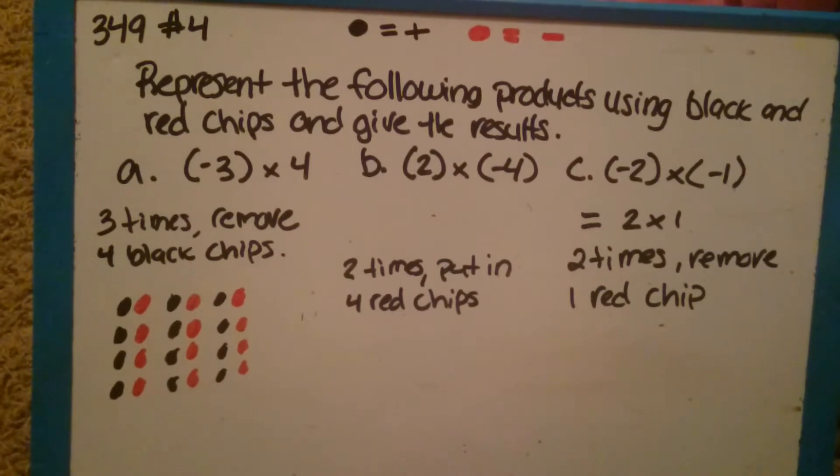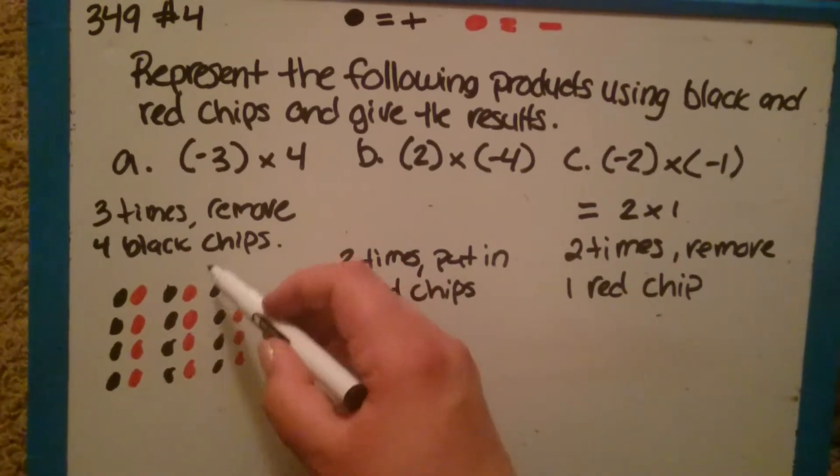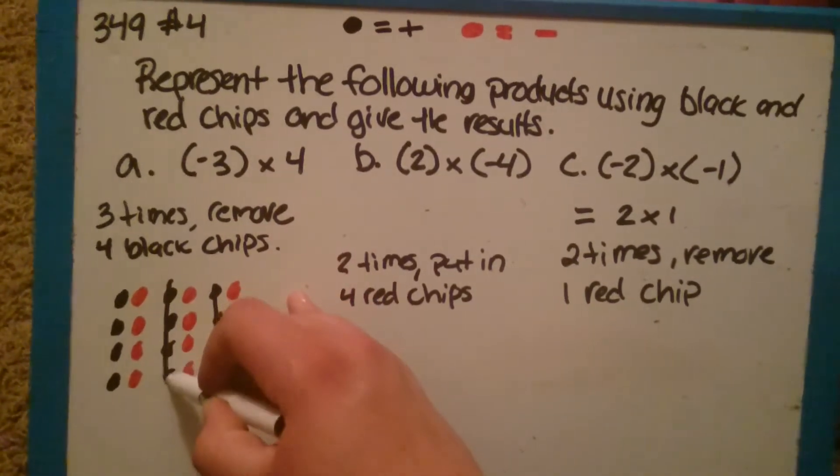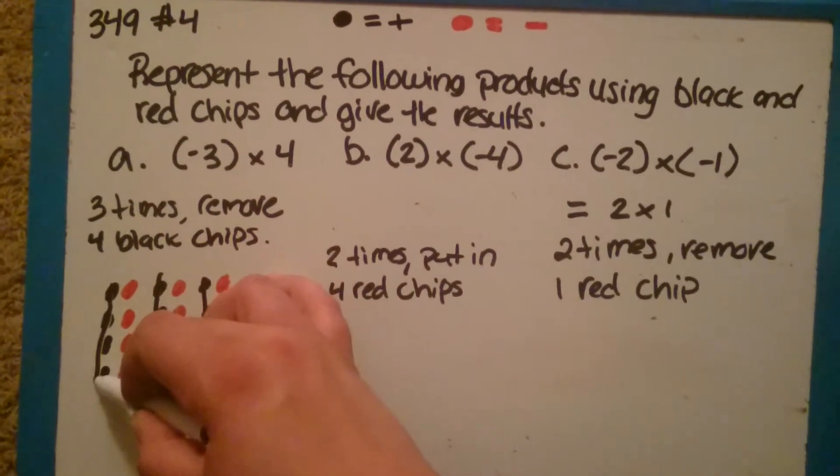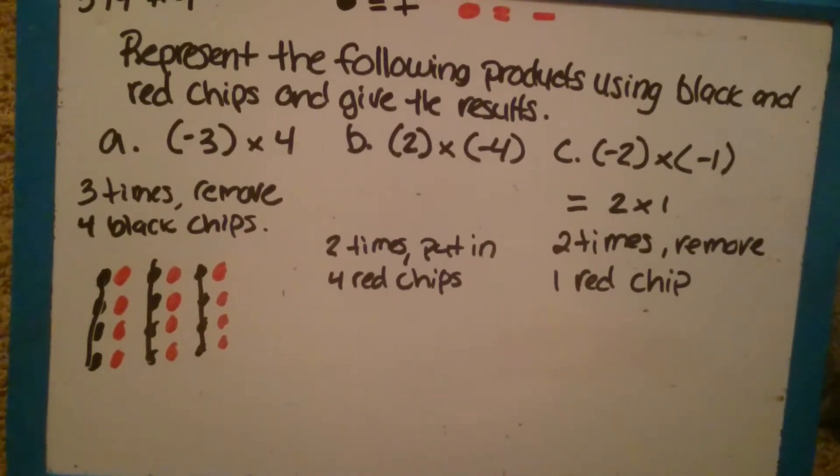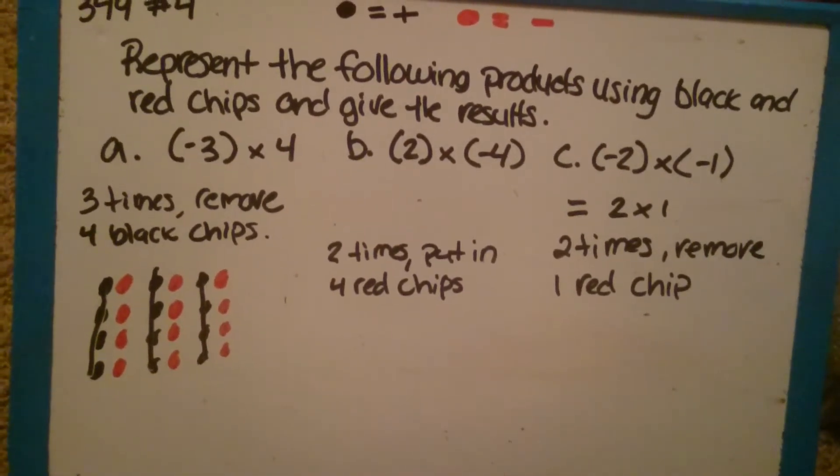And since it's saying to remove 4 black chips 3 times, we can take away 4 black chips 3 different times. So let's say there's 4, there's 4 twice, and there's 4 3 times, which leaves us with the answer of negative 12, because you see we have 12 red chips.